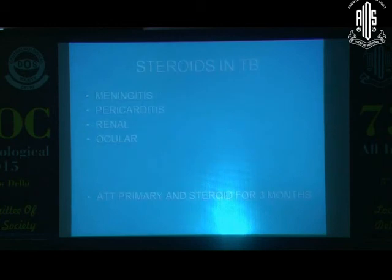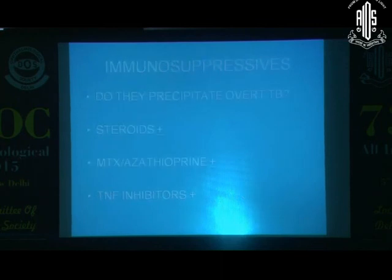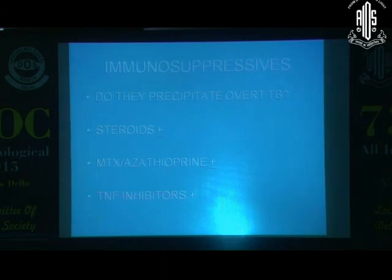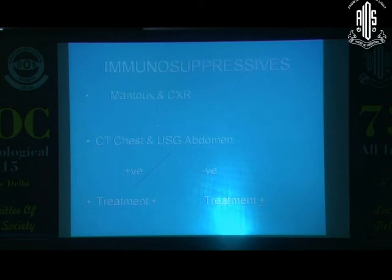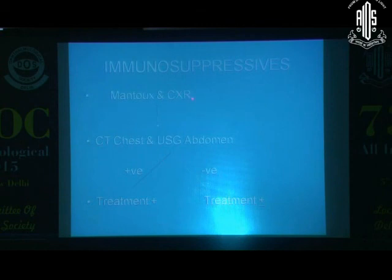Remember, steroids are given in tuberculosis for meningitis, pericarditis, and renal disease — for a maximum of three months. But in ocular disease, which is immunological, you need to give immunosuppressives as long as the disease is active; you cannot base your primary treatment on ATT. When I start an immunosuppressive, besides HIV, hepatitis B, and HCV screening, I get a CT chest and abdomen done. If you don't have a good radiologist, get a CT abdomen. If positive nodes, lesions, or scars are found, I treat the patient; if not, I don't. I go by the CT chest rather than Mantoux and chest X-ray, because CT chest and abdomen really picks up cases you don't suspect to have tuberculosis. If the Mantoux is severely positive with family history and hilar lesion on X-ray, get a CT scan done — that gives far better clues than Mantoux or Quantiferon.